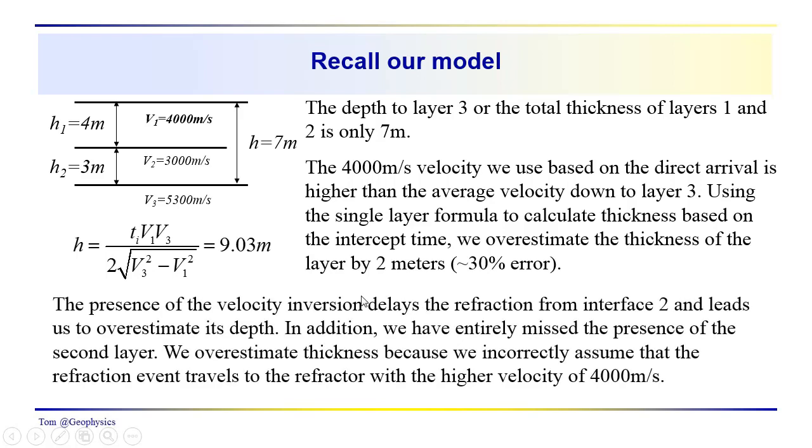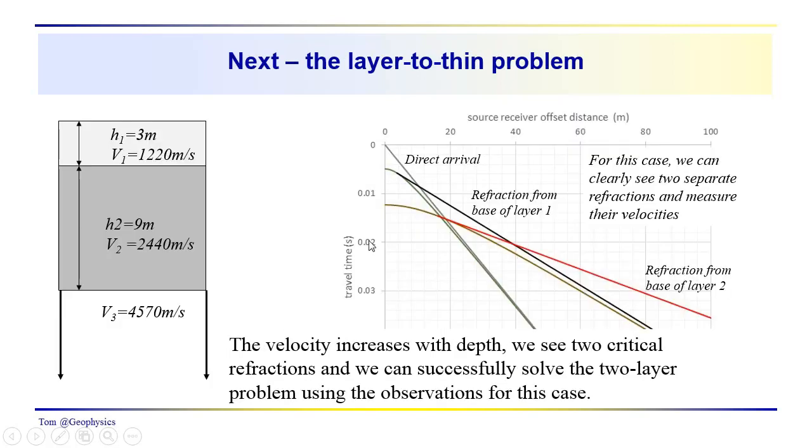So the presence of the velocity inversion delays the refraction from interface 2, and it leads us to overestimate its depth. We've also entirely missed the second layer, and we overestimate the thickness because we incorrectly assume that the refraction event travels from the surface all the way down to the refractor with a velocity of 4,000 meters per second. So that's the issue with the velocity inversion problem.